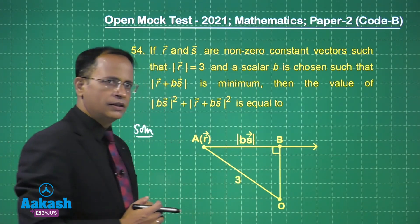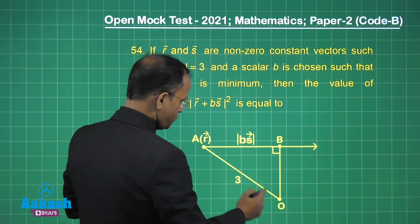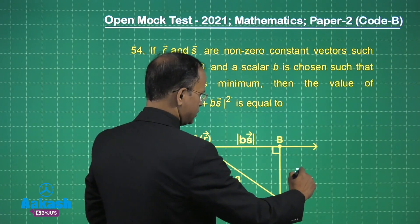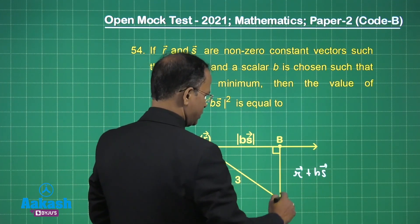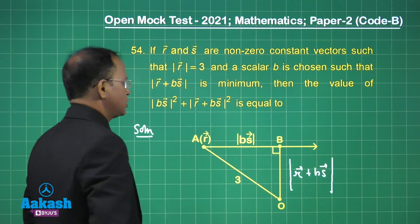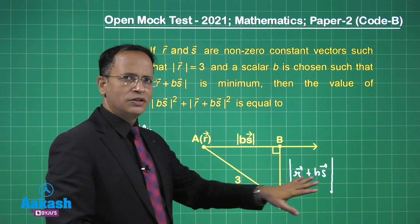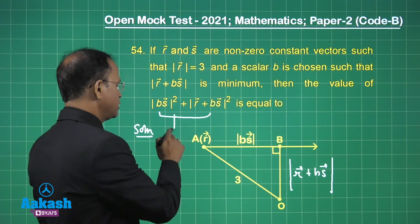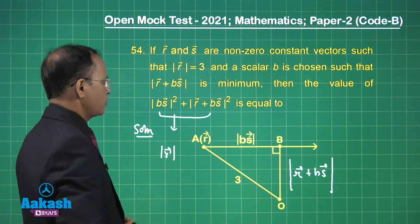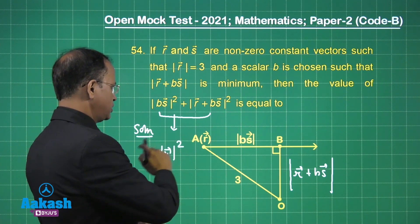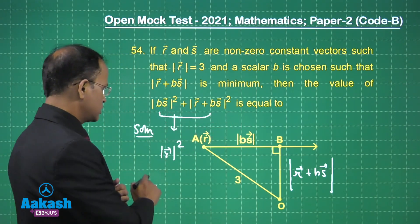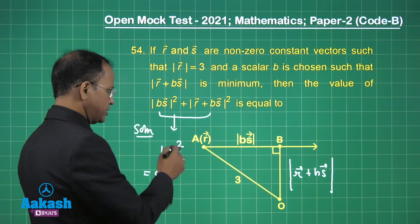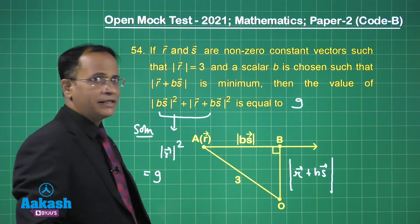Looking at the diagram, r is the position vector represented by point A, and b·s is another vector. The vector r + b·s is minimum when b·s is perpendicular to r + b·s, meaning |b·s|² + |r + b·s|²_min = |r|² = 9. So the final answer is 9.